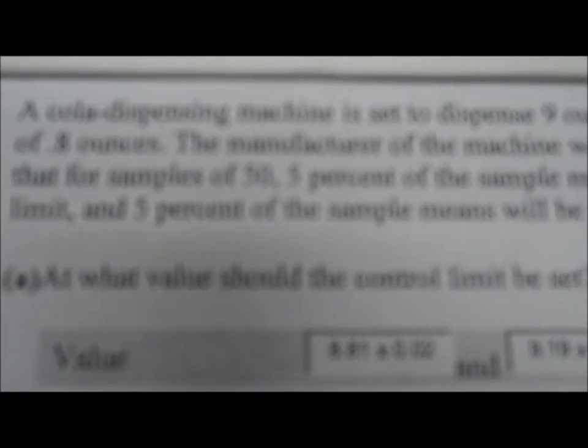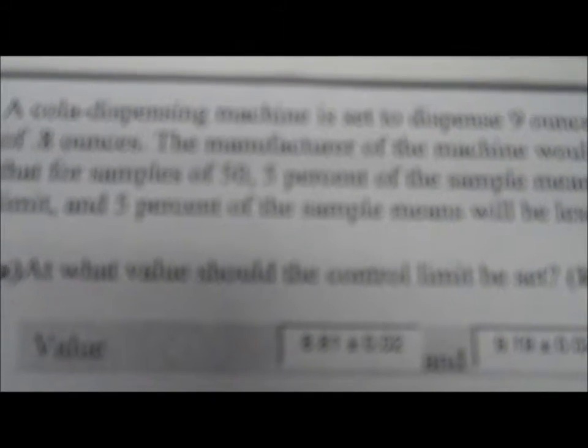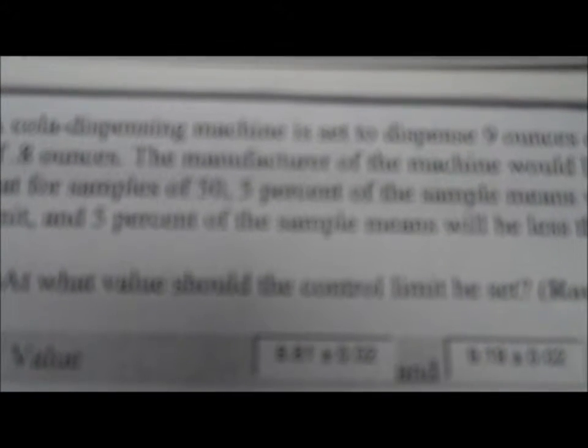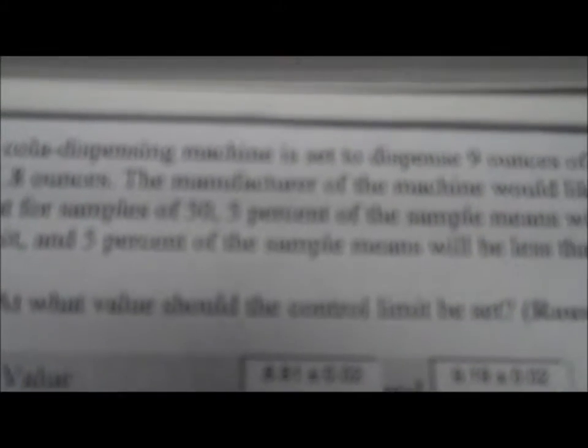A cola dispensing machine is set to dispense 9 ounces of cola per cup with a standard deviation of 0.8 ounces. The manufacturer would like to set the control limit such that for samples of 50, 5% of the sample means will be greater than the upper control limit and 5% of the sample means will be less than the lower control limit.